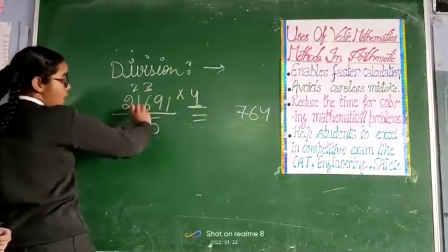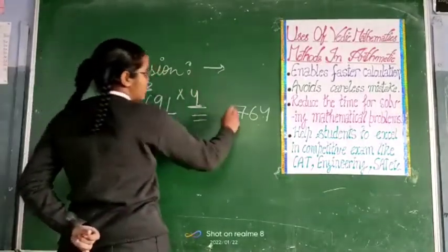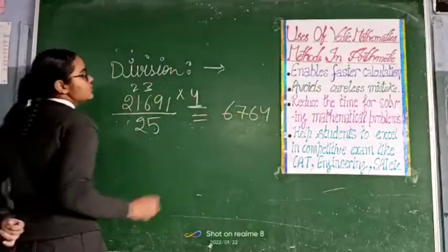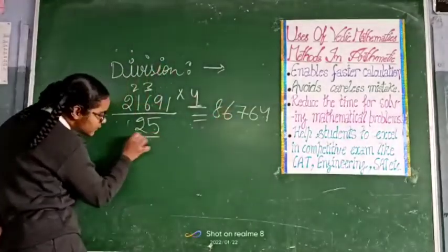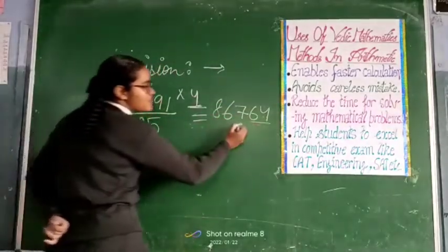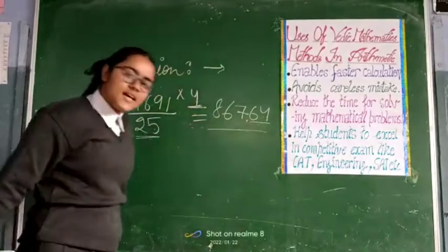4 by 4 means 16 and plus 2, which makes 18. And 5 plus 1 makes 21. After 2 digits, mark a point. It is your final answer.